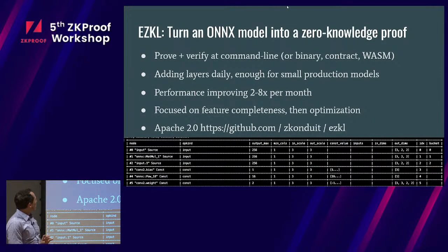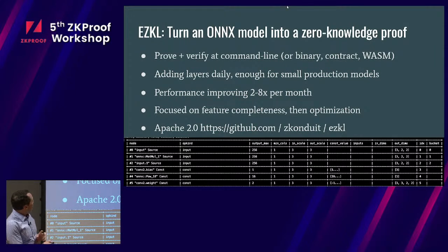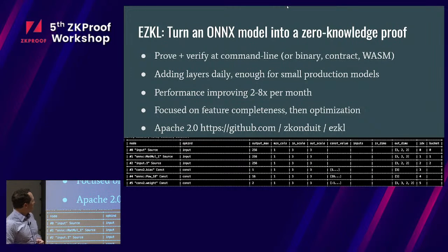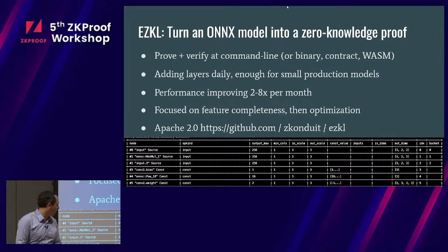More practically, what we've been doing is creating a command line tool that lets you take an ONNX model — a way to freeze a neural network into an output format created in PyTorch or something like that — and create a zero-knowledge proof with a simple command line call, or a proof and verification tool targeting different execution environments. We're adding a lot of layers, performance is improving — performance is still terrible, but it's getting better because we're focused on feature completeness. We've been building in the open since July. It's Apache licensed if you want to check it out.